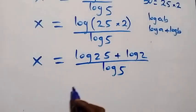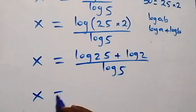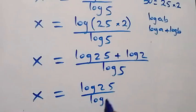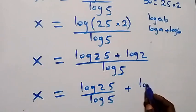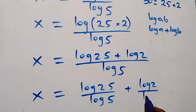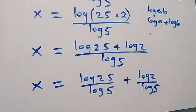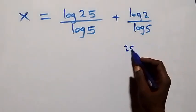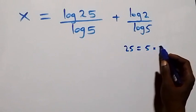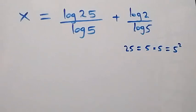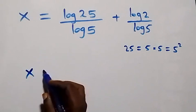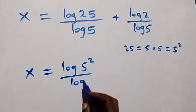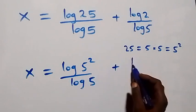We can separate this fraction and we have x equals to log 25 over log 5, plus log 2 over log 5. Now we can also write 25 as 5 times 5, which is the same as 5 squared. So the equation becomes x equals to log 5 squared over log 5, plus log 2 over log 5.